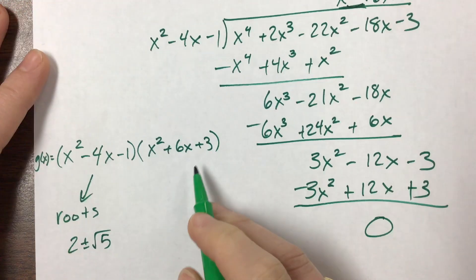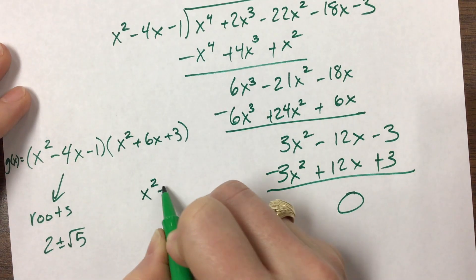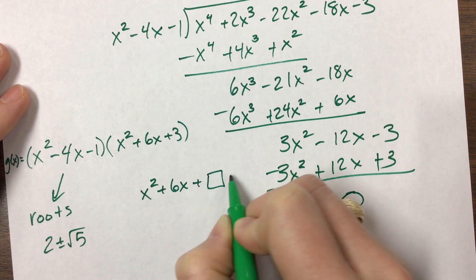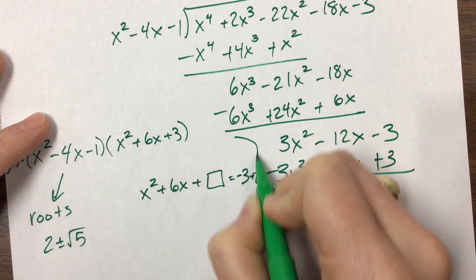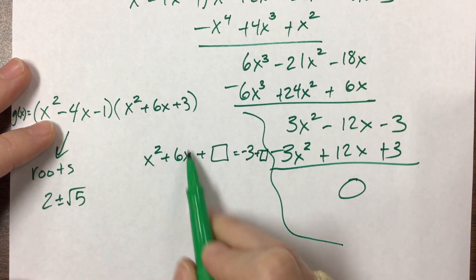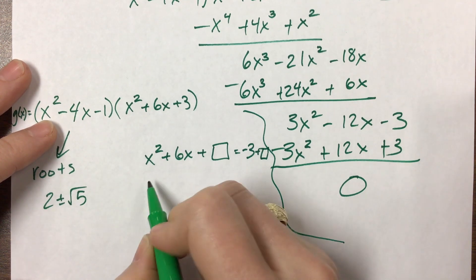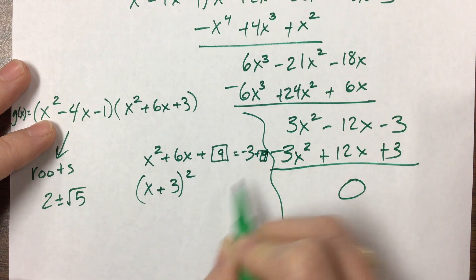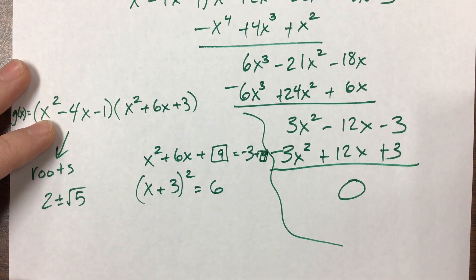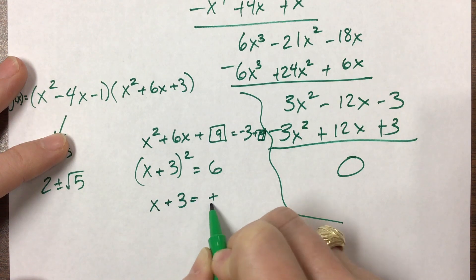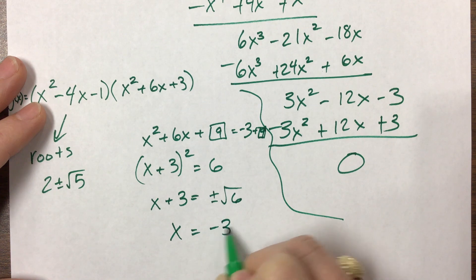Now we need to see what our roots are from the second quadratic, because the question said to find all roots. I have x squared plus 6x plus 3 equals 0. Anytime the middle coefficient is even, I like to complete the square — I just think it's easier. That's x plus 3 squared; 9 goes in the box. Negative 3 plus 9 equals 6. So x plus 3 equals plus or minus root 6, therefore x equals negative 3 plus or minus root 6.